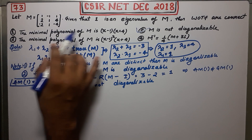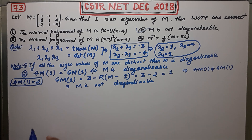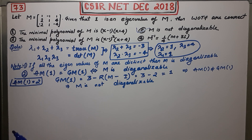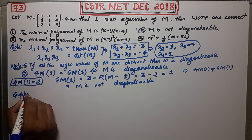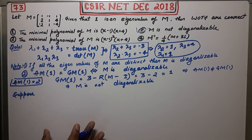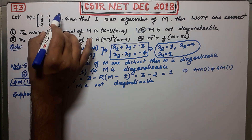Now check option one regarding the minimal polynomial. If you have studied Jordan canonical form in linear algebra — which is very important and you should study from your books or notes — suppose option one is true. That would mean the minimal polynomial of M is (x minus 1)(x plus 4). It will be difficult to find the minimal polynomial without knowing Jordan canonical form; it could take five to six minutes in the exam.